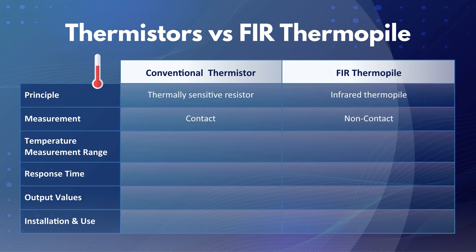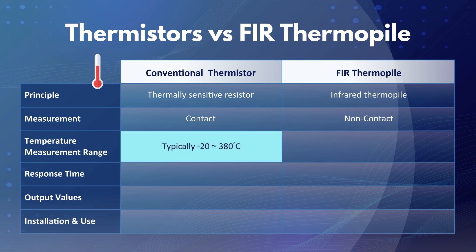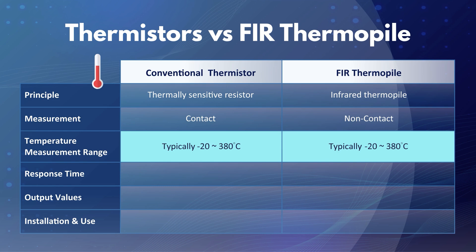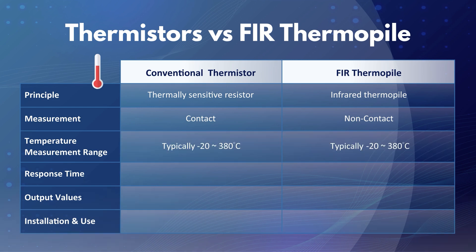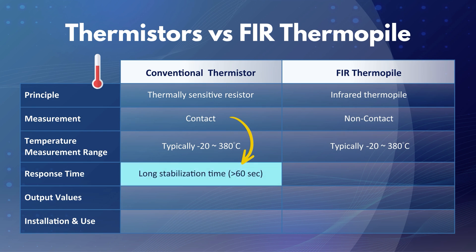In terms of temperature sensing range, both conventional thermistors and FIR thermopiles can essentially cover a range from minus 20 to 380 degrees Celsius. The specific choice depends on the solution required to meet the application requirements. Since most temperature measuring devices such as thermistors or thermocouples require direct contact with the target object, this physical measurement approach can limit the thermistor's usage and is prone to delay waiting for the sensor to reach thermal equilibrium, resulting in slower response time.